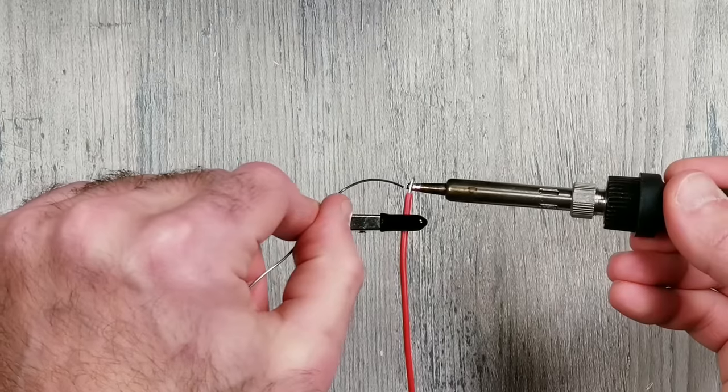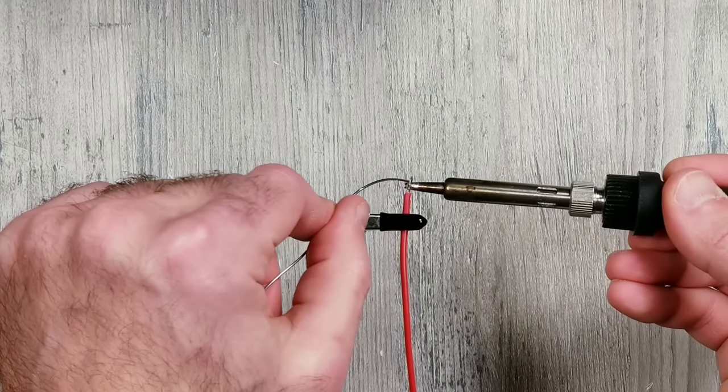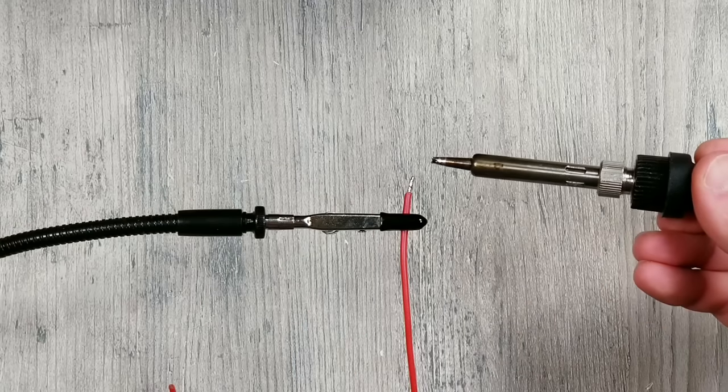Next I'll be doing what's called tinning the wires. Put a little bit of solder on your iron and use that to heat up the wires underneath so that the solder melts into the wire. Do this for all three.